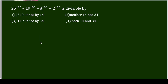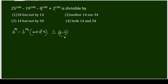Before solving this question directly, I want to recall one small concept in number theory — modular arithmetic — on which it is based. The concept is: a^m minus b^m, modulo n, is congruent to (a minus b) modulo n.